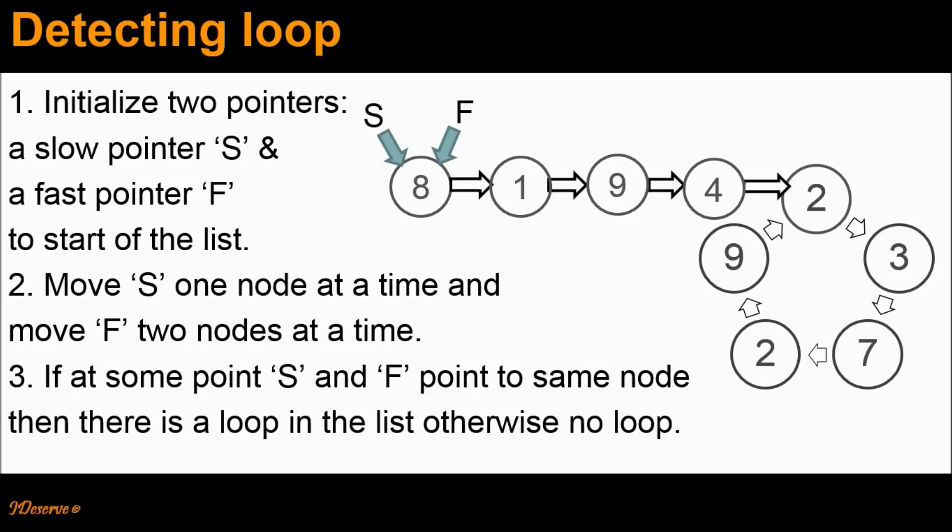While advancing pointer S and pointer F, if at some point these pointers point to the same node, then we say that there is a loop in the list.